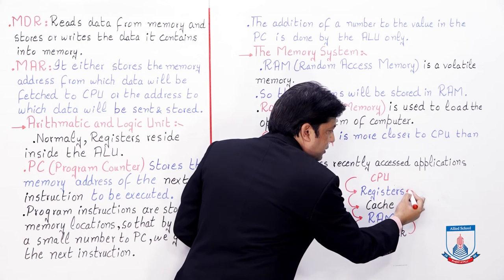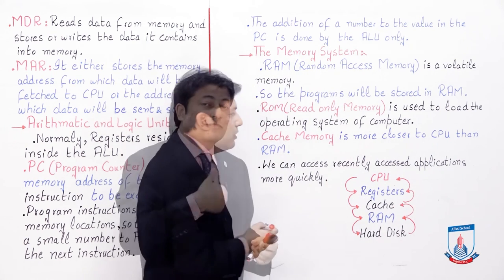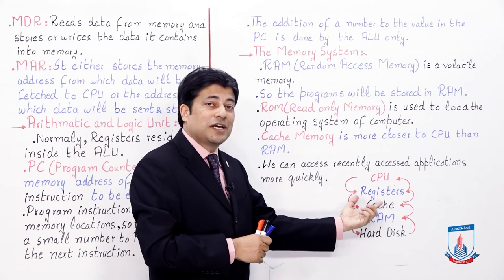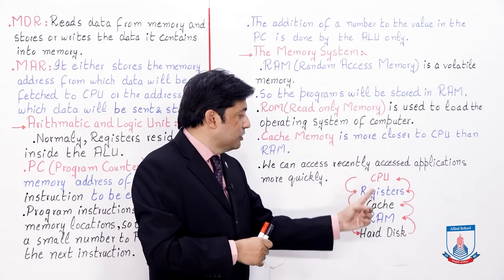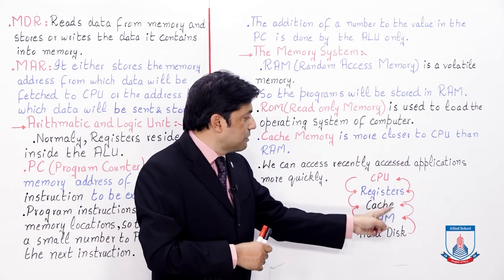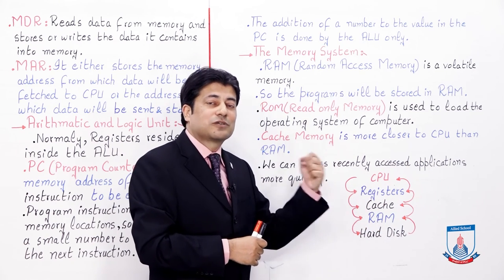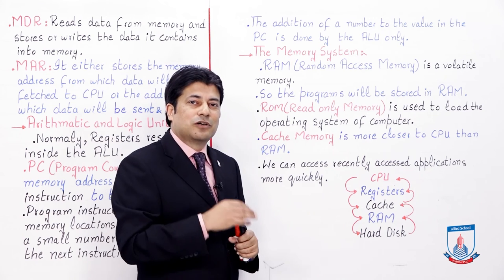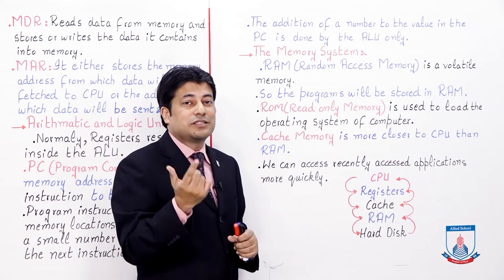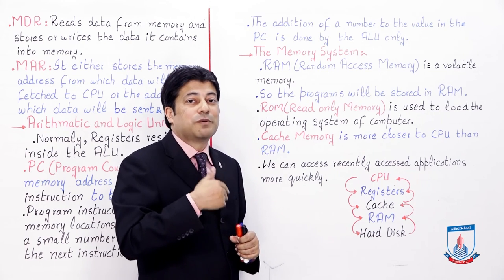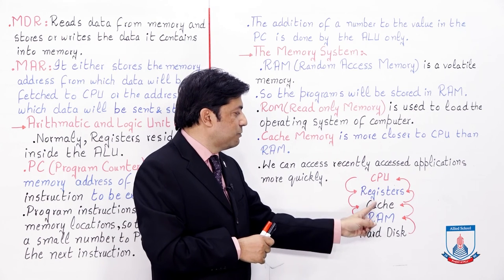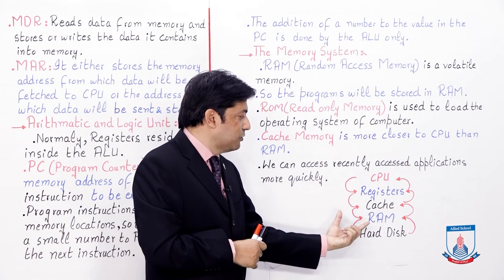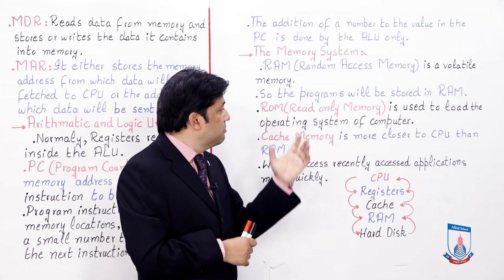When reply comes back, the hard disk sends data to RAM, RAM stores a copy and forwards the original to cache, cache passes it to registers, and registers execute it. If the CPU needs that data again, it checks registers, then cache — if cache has it, there is no need to go to RAM or hard disk, saving a lot of time. That is why cache memory is used.